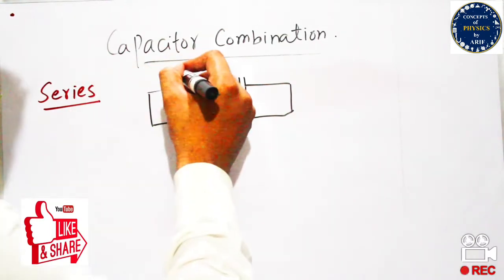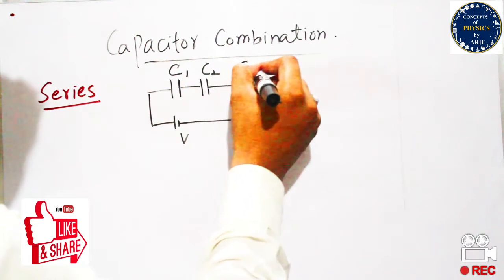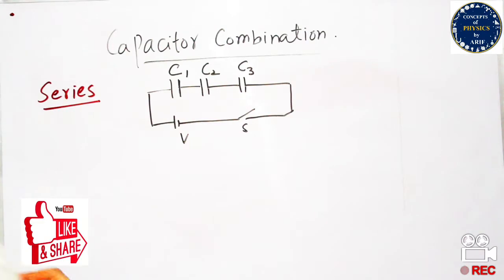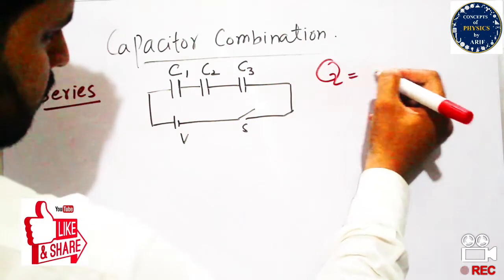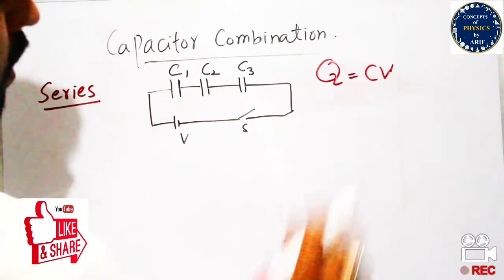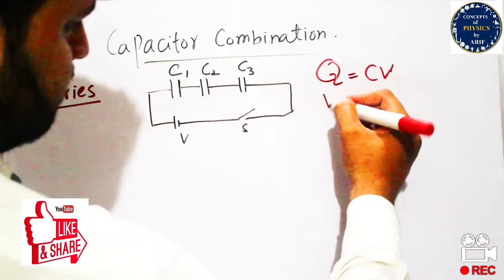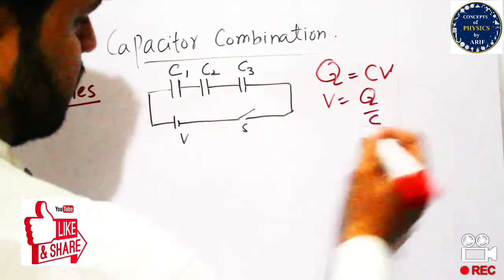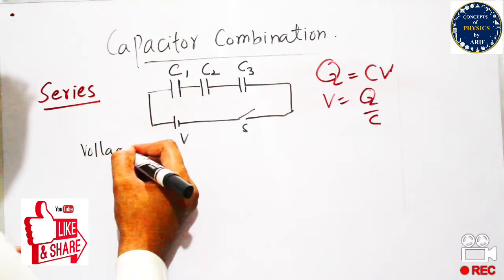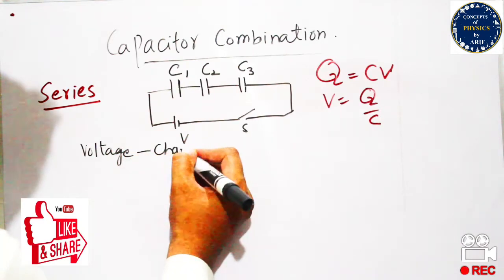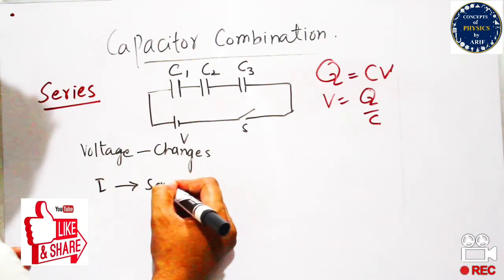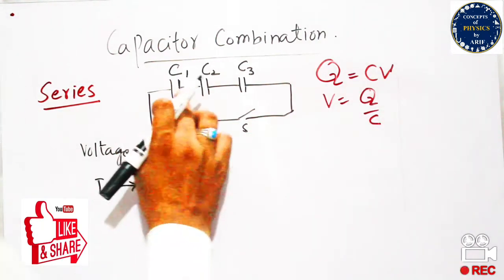Please note that the voltage source and switch are not explicitly mentioned in the textbook, but without voltage and switch there will be no current flow through these capacitors. So in order to understand this, please connect a voltage or battery and switch with the series combination of capacitors. We know the formula Q = CV, so we can derive V = Q/C. In series combination, voltage changes but current remains the same.